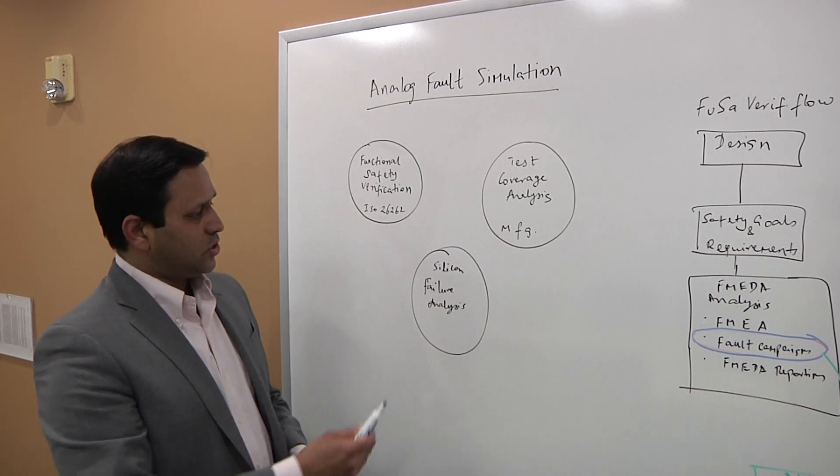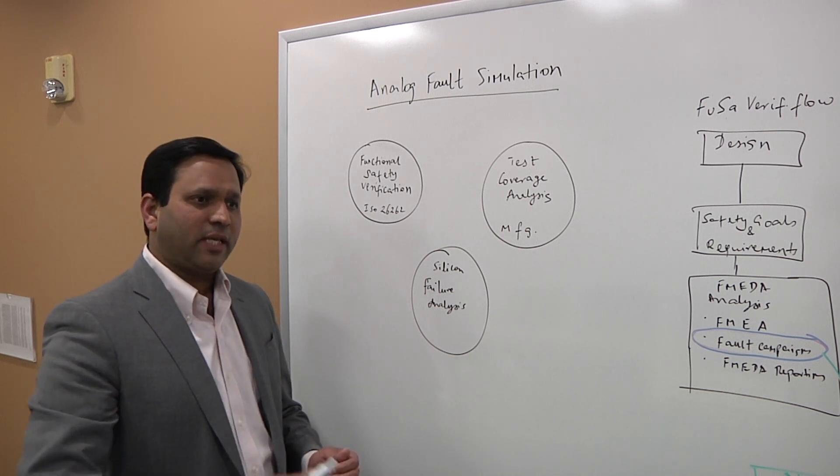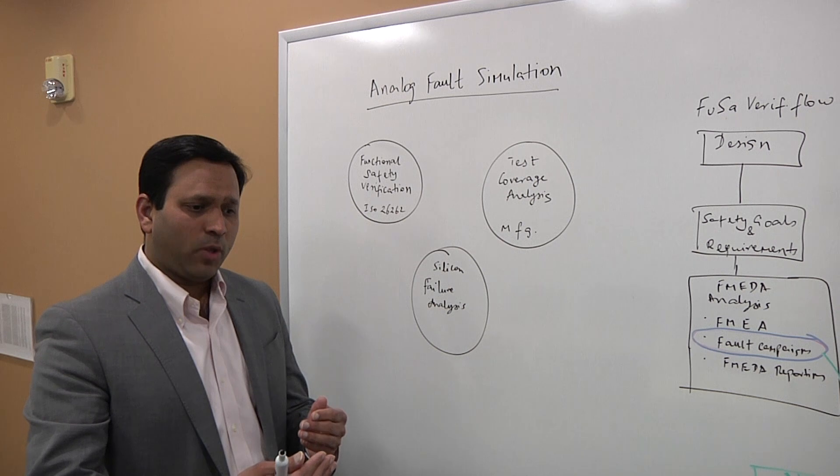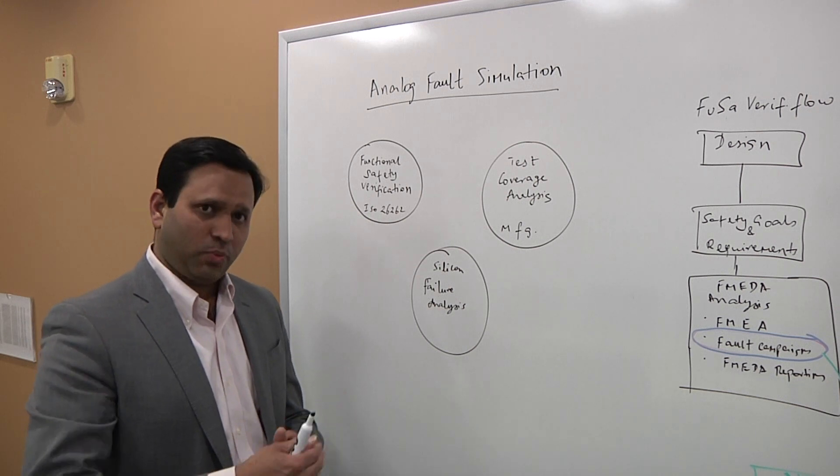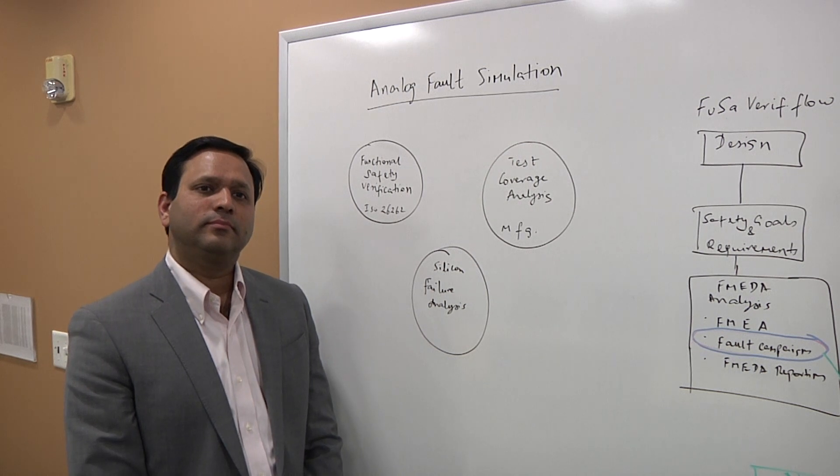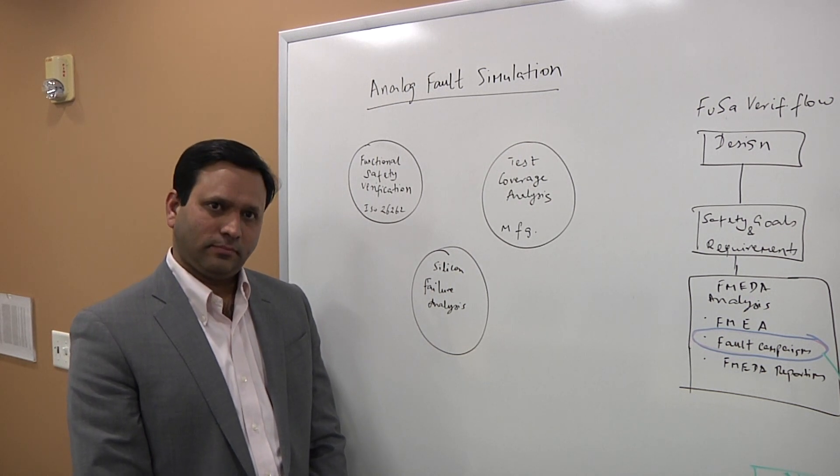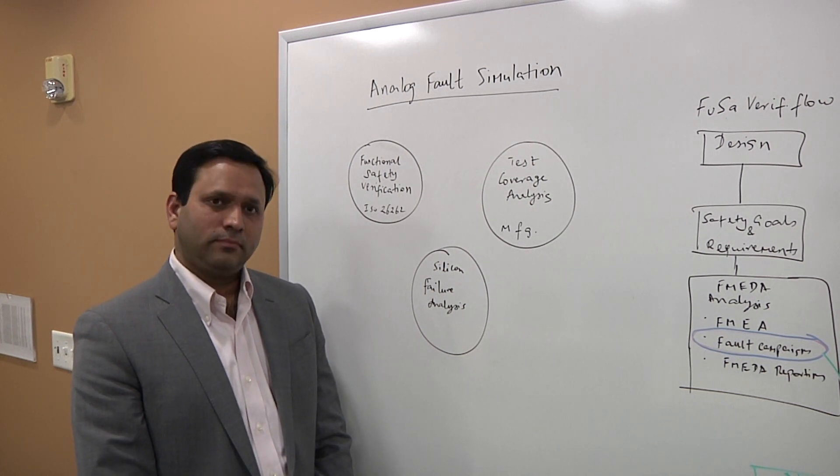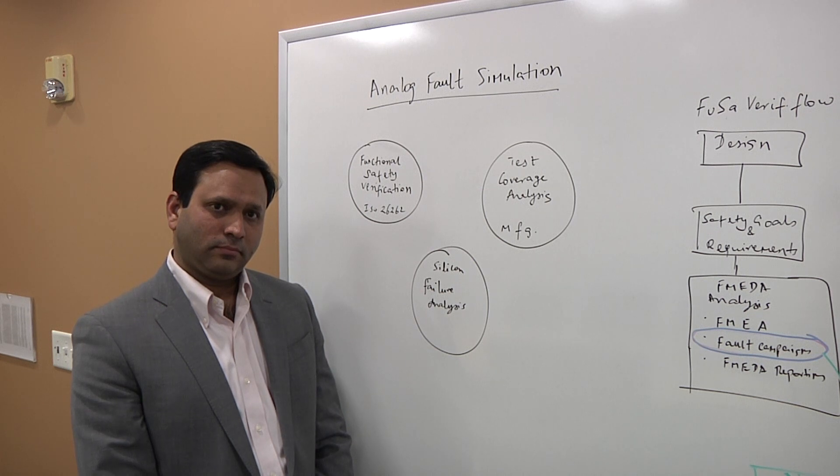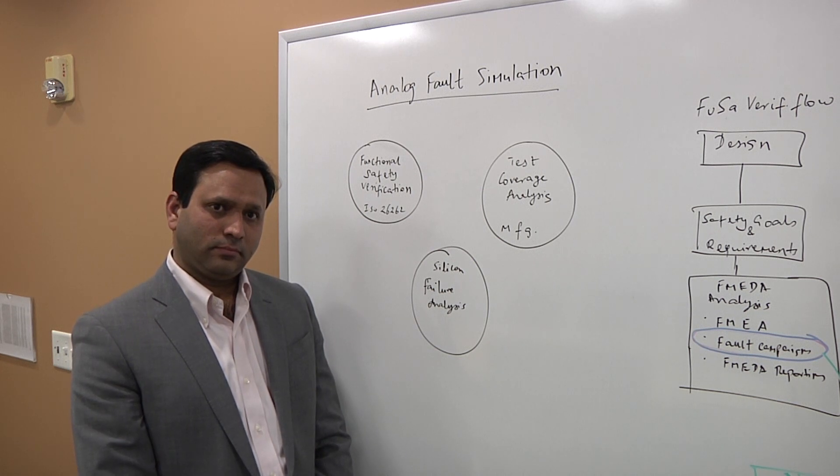The third one is silicon failure analysis. That's yet another way in which you can use analog fault simulation to improve or speed up the whole failure analysis process when you get field returns. So when you're dealing with an analog fault, it may not be obvious as the chip comes out the door that there's actually a fault there, right? Because it's both contextual depending upon where it is in a system. It's also potentially use case dependent because it varies from one use to another. Your driving habits may be different than mine.